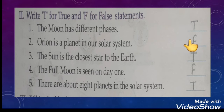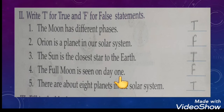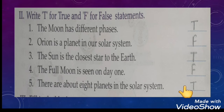The sun is the closest star to the earth — that is a true statement. The full moon is seen on day 1 — full moon does not come on day 1, so it is a false statement. There are about eight planets in the solar system — the total number of planets in our solar system is eight, so it is a true statement.